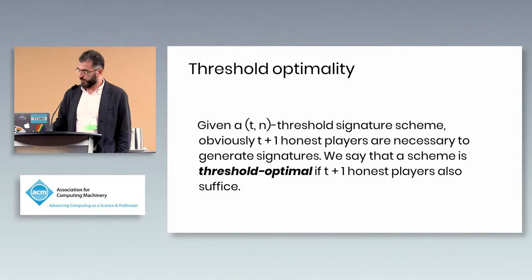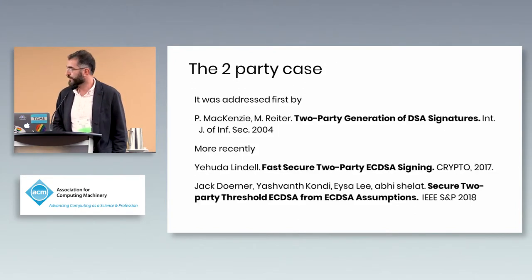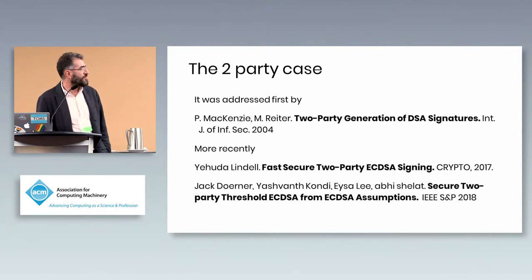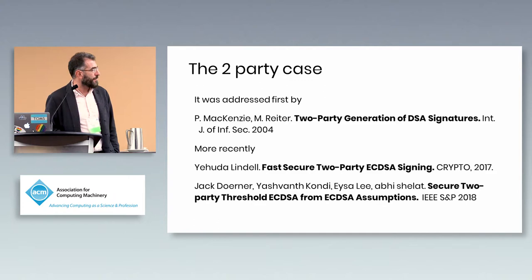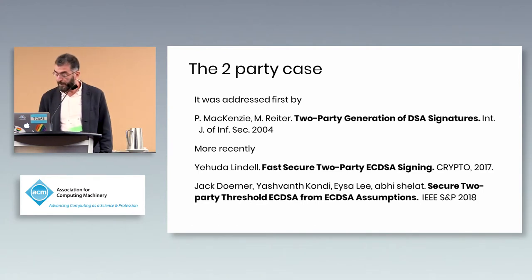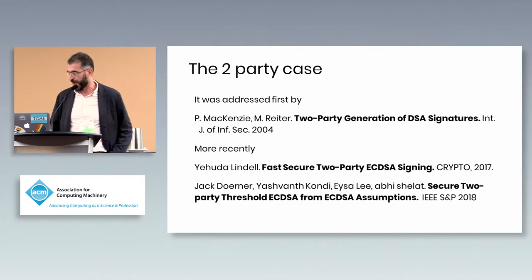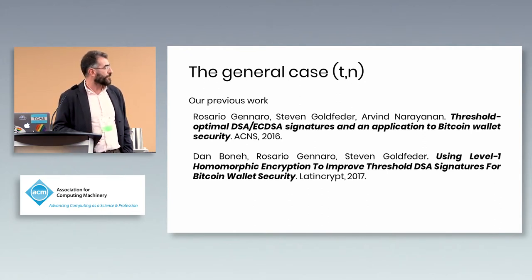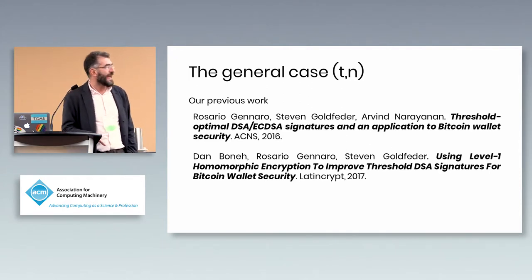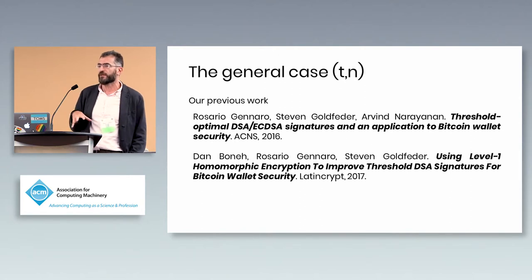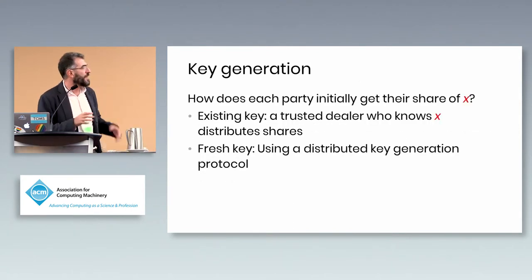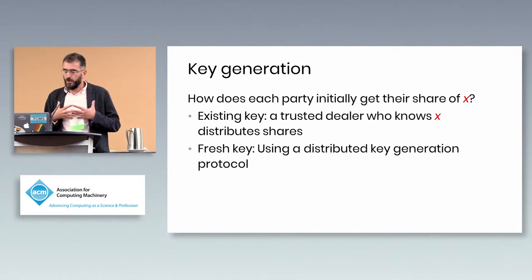For the two-party case, the problem with my original solution was identified in the early 2000s in a paper by McKenzie and Reiter, then improved more recently by Lindell and others. For the general n-party case with t servers, Steven and I and co-authors generalized the McKenzie-Reiter approach from two parties to n parties in work appearing over the past couple of years, driven by the cryptocurrency renaissance in this research area.